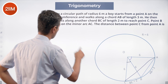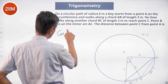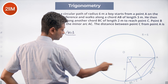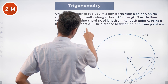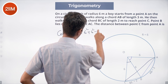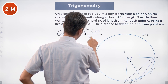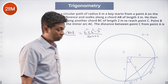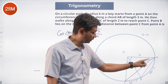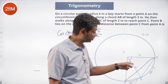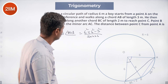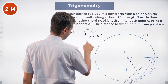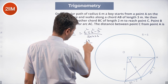Let's do this methodically. Cos of angle BOA equals 6² + 6² − 3² divided by 2 × 6 × 6. That's 36 + 36 − 9, which is 63, divided by 72. So cos(AOB) = 63/72 = 7/8.